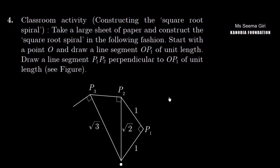Question number 4: Classroom activity — constructing the square root spiral. Take a large sheet of paper and construct the square root spiral in the following fashion. Start with the point O and draw a line segment OP1 of unit length. Draw a line segment from P1 perpendicular to OP1, also of unit length, as shown in the figure.